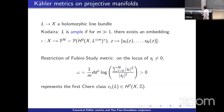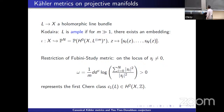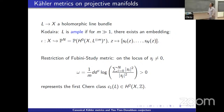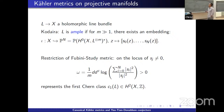A large class of Kähler manifolds consists of projective manifolds. Let L be a holomorphic line bundle. Kodaira's theorem tells us that L is ample if we can embed X into a large projective space by using holomorphic sections of a multiple of L. We can take this to be a definition of ampleness of L. Then we can restrict a Fubini-Study metric on the projective space to X, and we get a Kähler metric. This Kähler metric represents the first Chern class of the holomorphic line bundle.